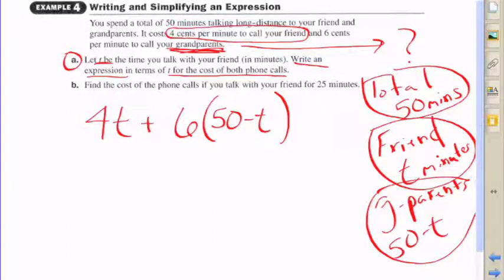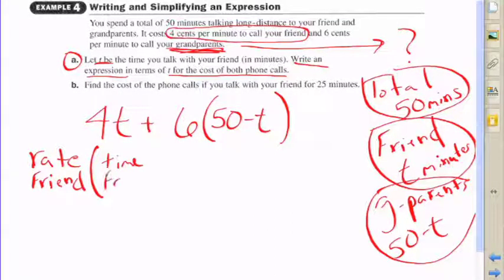So we're going to do six cents times 50 minus t, because 50 minus t represents the number of minutes that you spoke with your grandparents. Now if you're a little tripped up on all that, this is where you might want to pause and kind of think this over and let this sink in.